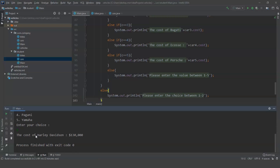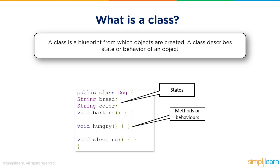With this let us move on to classes and understand their concept. A class is a blueprint from which objects are created. A class describes the state or behavior of an object. In this example, dog is a class. The variables in this class are breed and color. The functions or methods of the class dog are barking, hungry and sleeping. We use objects of a class to access its variables and functions.